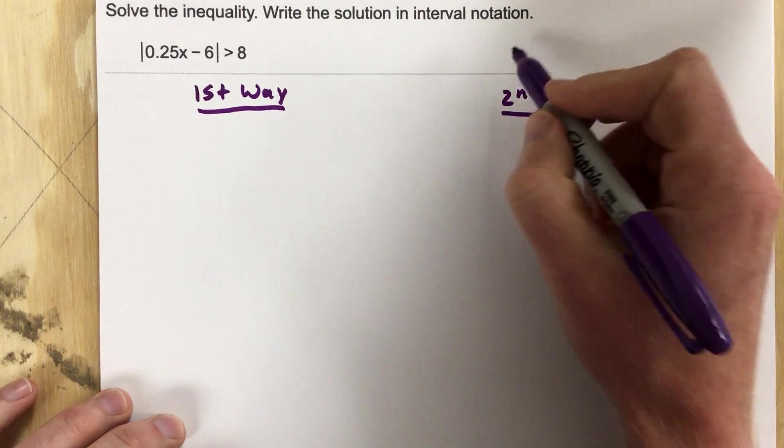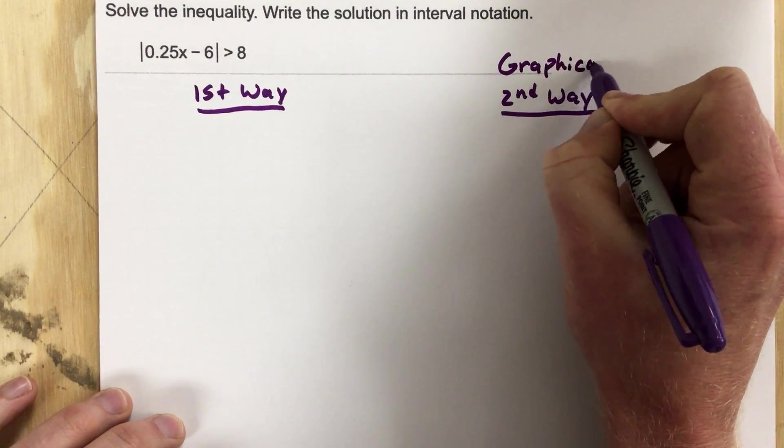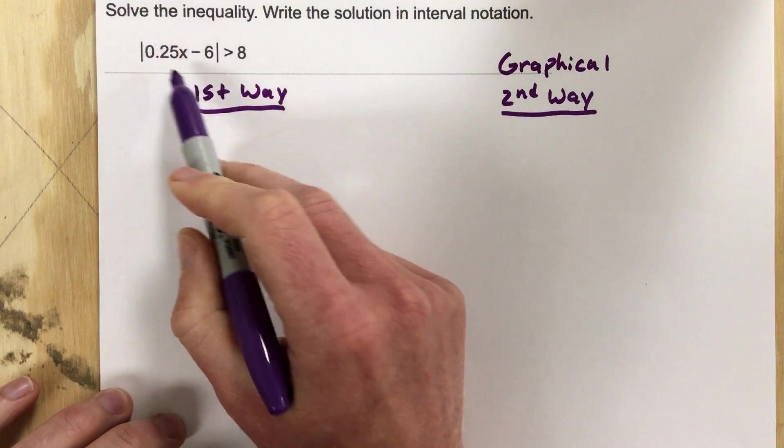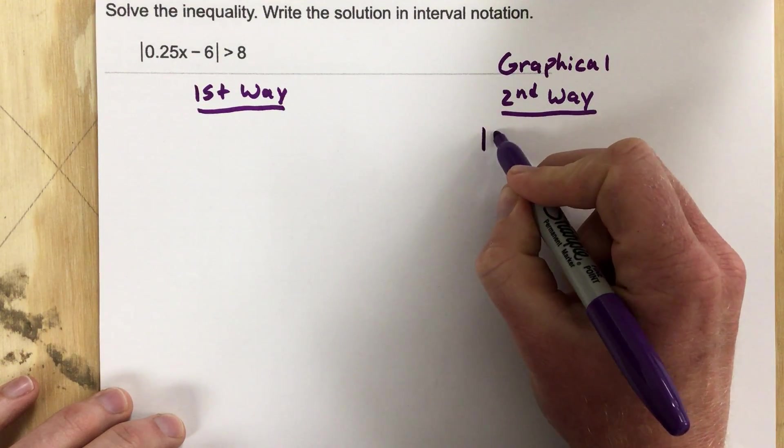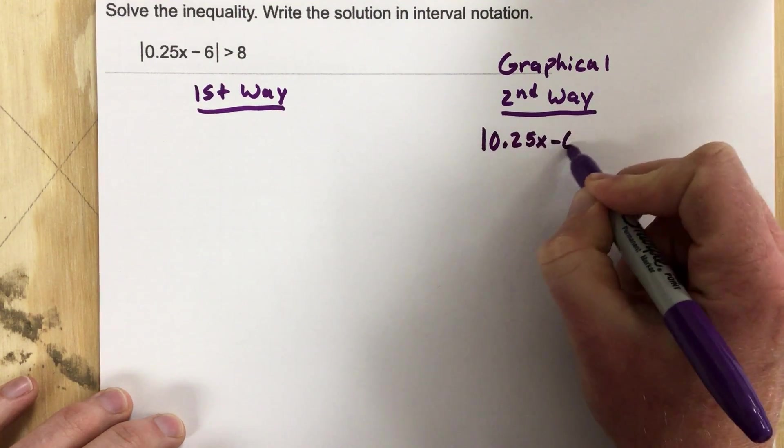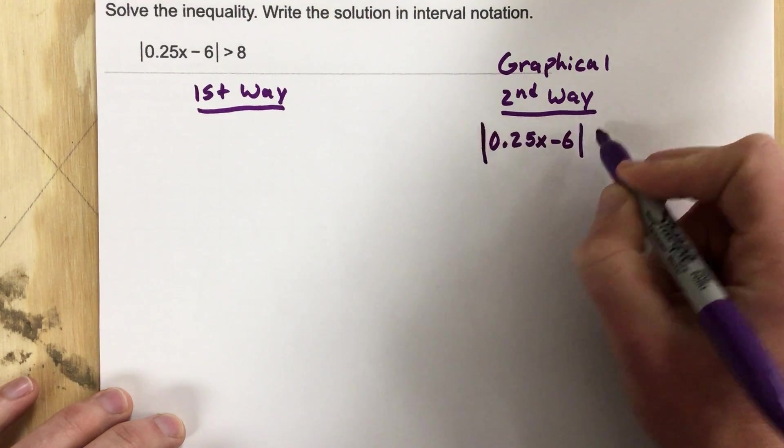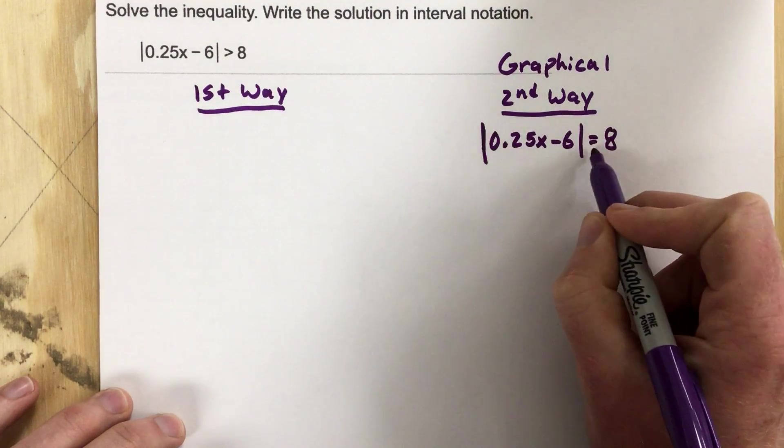So let's do the second way first. This is the graphical. Now for the graphical approach, I like to take this absolute value inequality and put it as just an absolute value equation. So I'm going to say that this equals 8. So I replace the inequality sign with an equal sign.